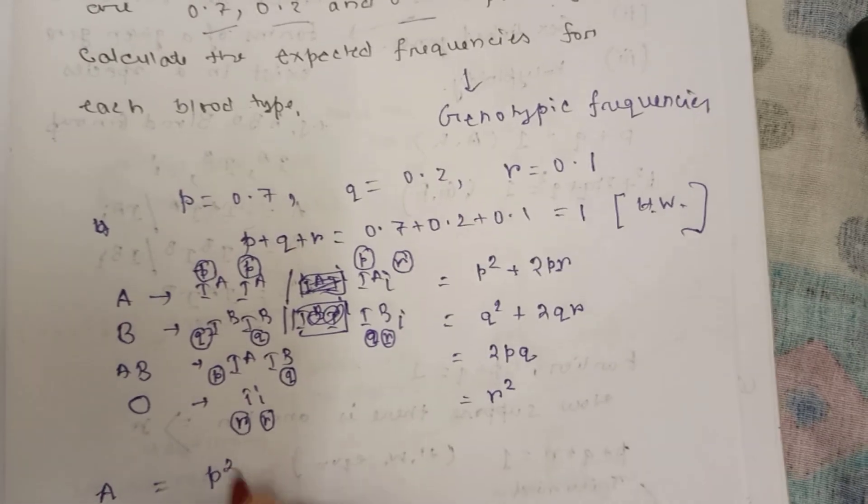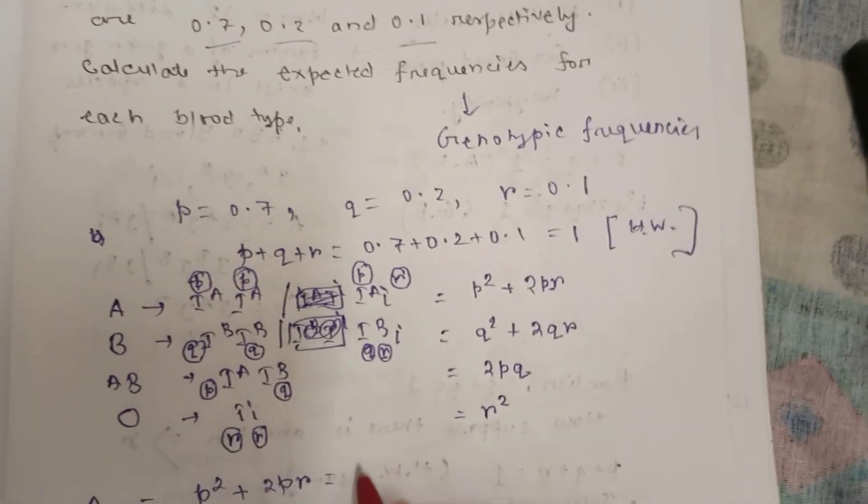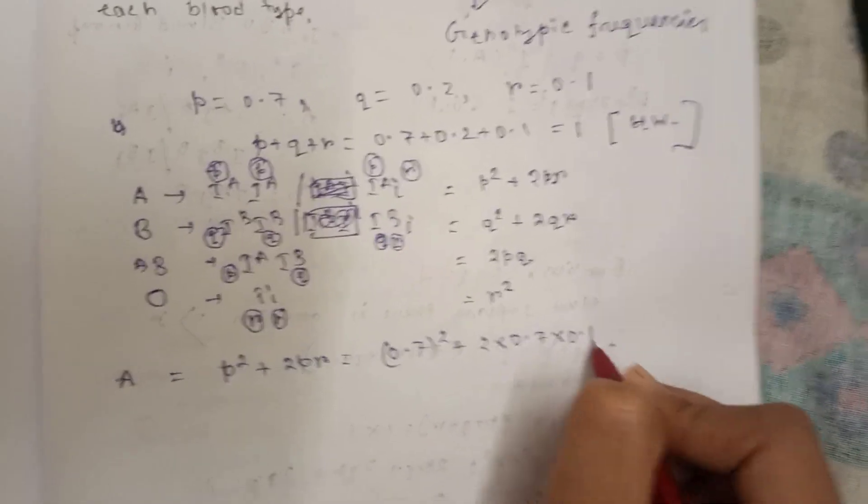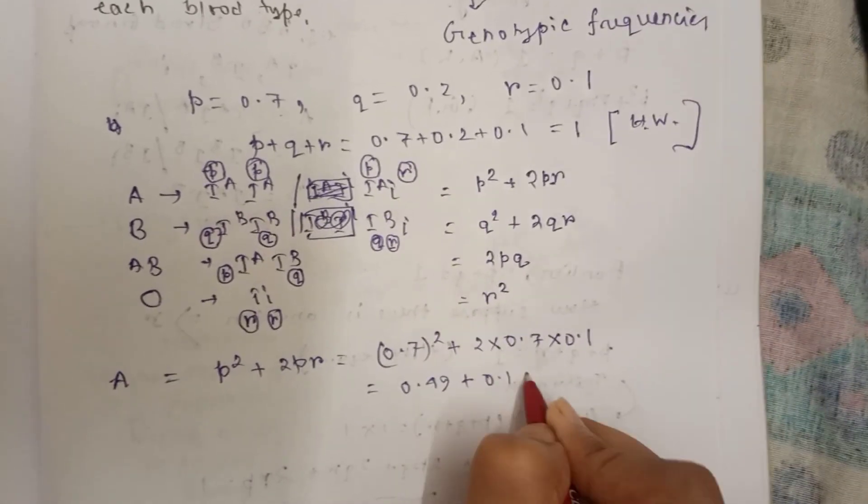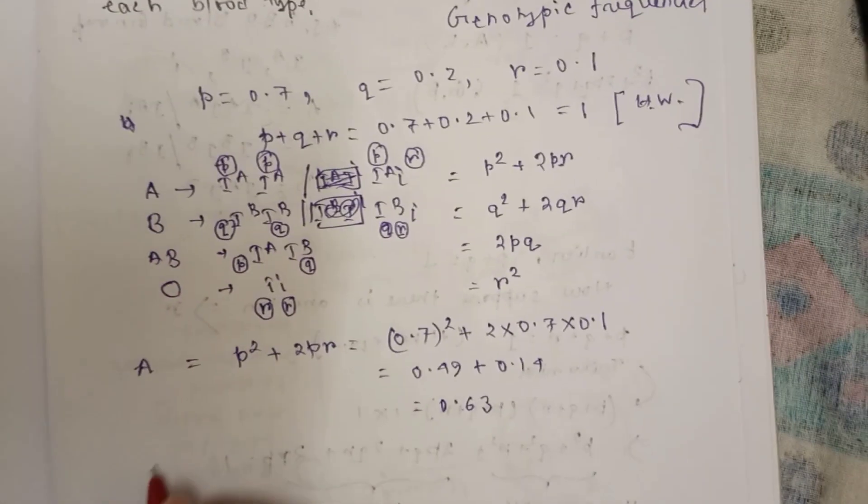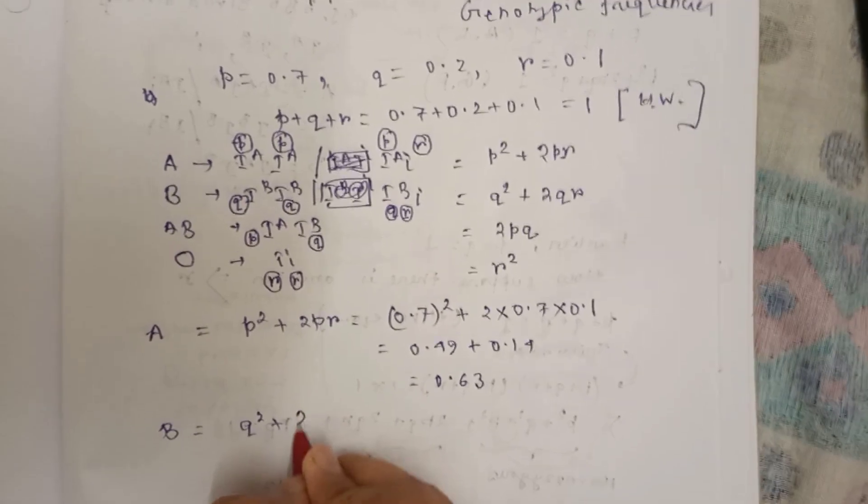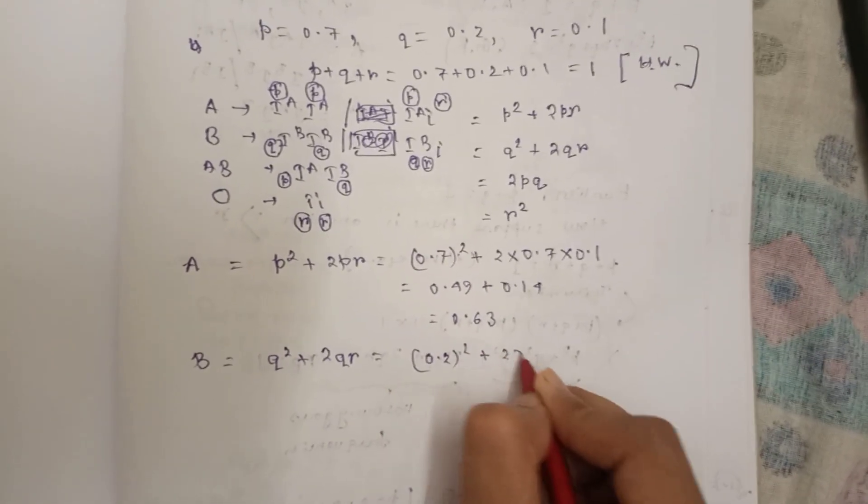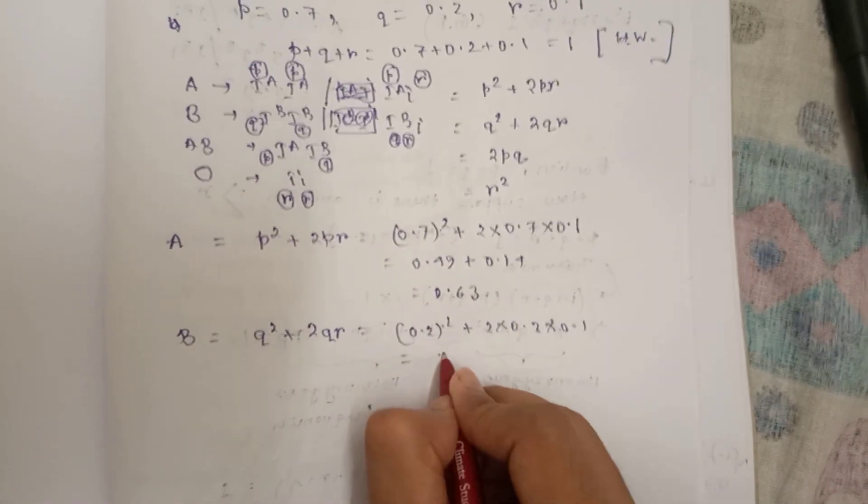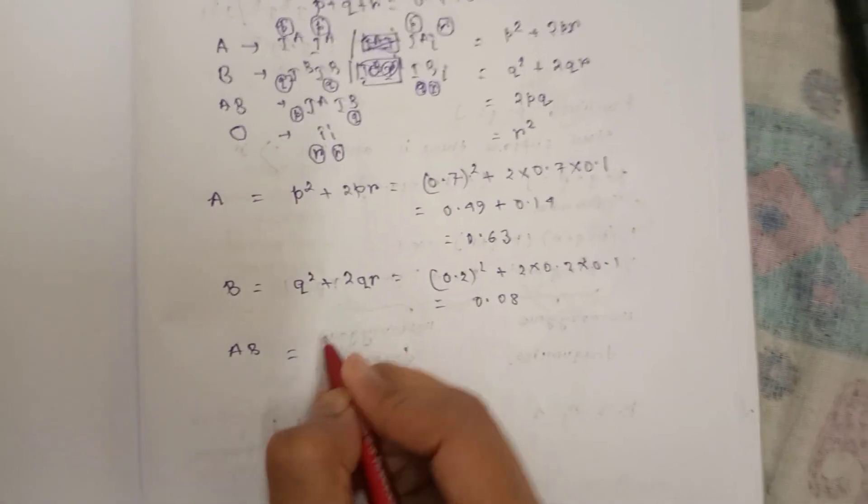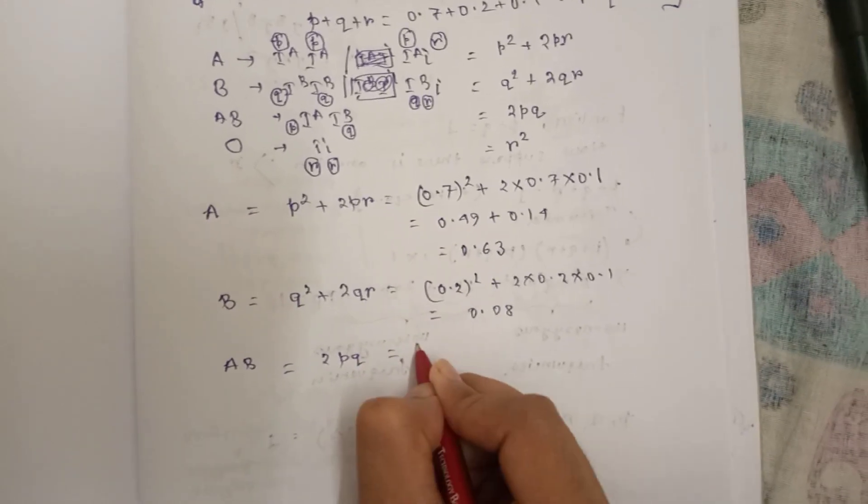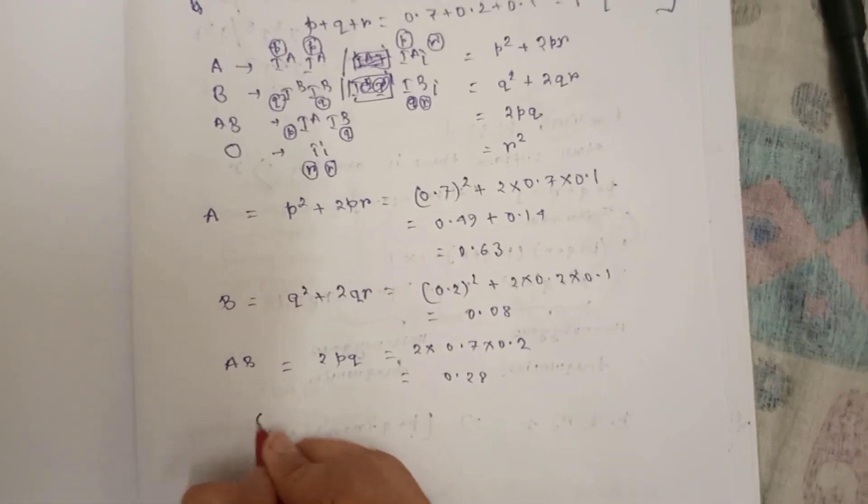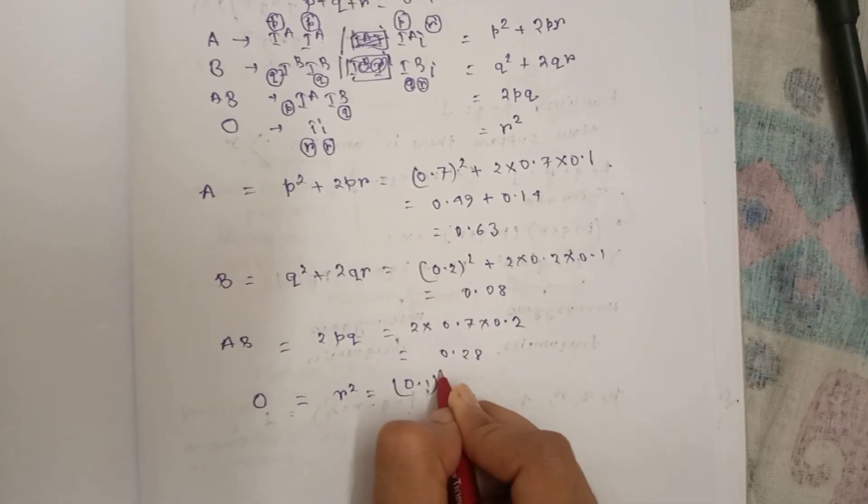For blood group A it is p square plus 2pr, that is 0.7 square plus 2 times 0.7 times 0.1, so it becomes 0.63. Similarly for B, that is q square plus 2qr, that is 0.2 square plus 2 times 0.2 times 0.1, that's 0.08. AB is 2pq, that is 2 times 0.7 times 0.2, equals 0.28. And O is r square, 0.1 square, equals 0.01.